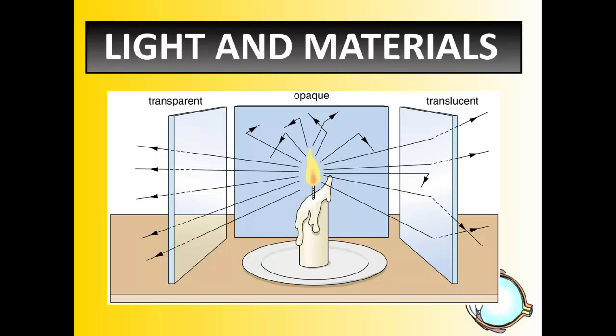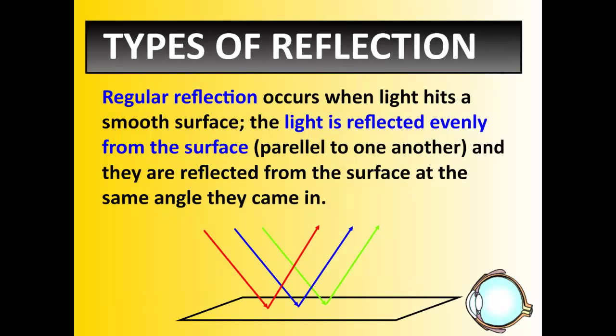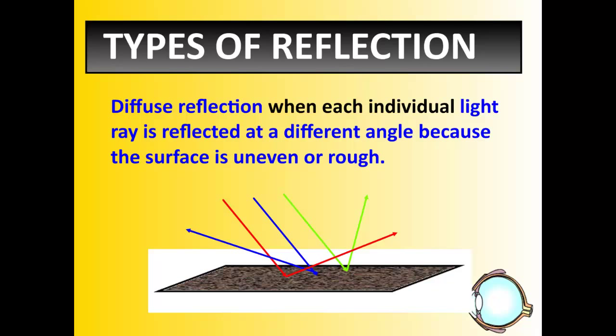Now, when light does strike, let's say for example, an opaque material, so that would be the center one there, where everything bounces back. When light hits an opaque material, we have something that occurs called reflection. If it hits an even surface, we call that regular reflection. Regular reflection is when light evenly reflects. The light coming in is the exact same angle as the light going out. If we hit a crumpled piece of tin foil, or an uneven surface, we get something called diffuse reflection.